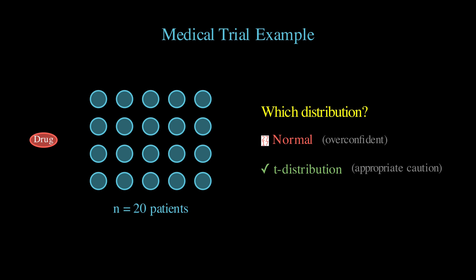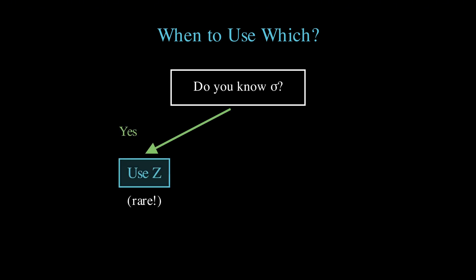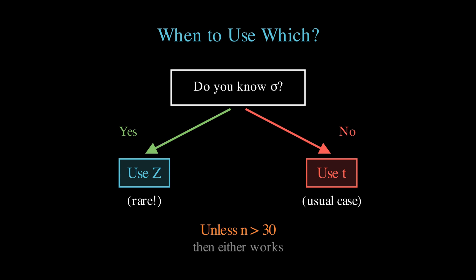Also, one thing that often confuses people is when to use the t-distribution versus the z-distribution, or the normal distribution. And the rule here is actually pretty simple. If you know the population standard deviation, which is rare, use the z-distribution. But if you are estimating the standard deviation from your sample, which is almost always the case, use the t-distribution. The only exception is when your sample size is large enough, typically over 30, that the difference between the two distributions becomes negligible.